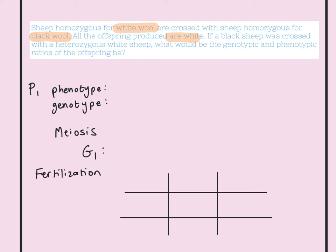Thinking ahead about the letters to use: if white is dominant, I'll use W. So the homozygous white sheep would be capital W, capital W. The homozygous black sheep would be two small Ws. And the offspring will be heterozygous — capital W and small W.